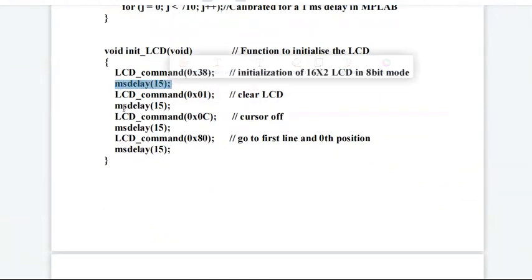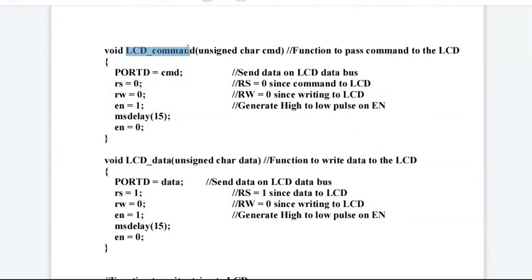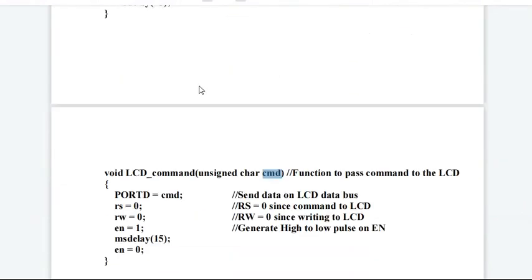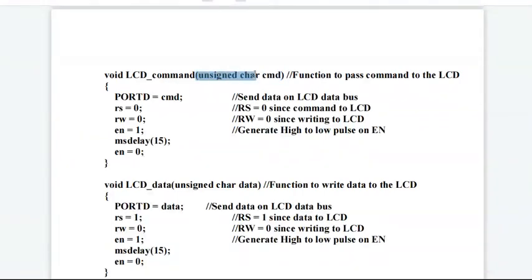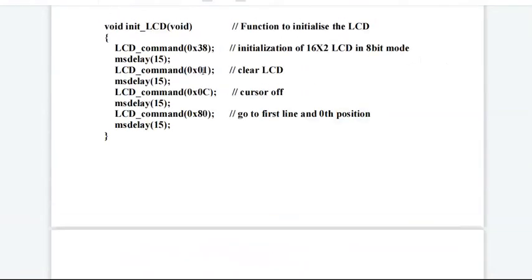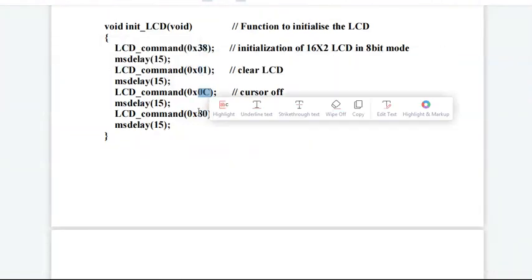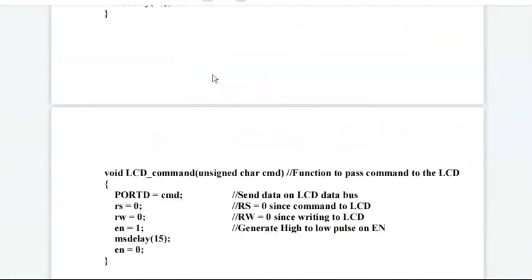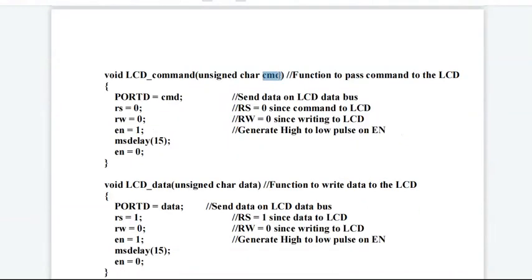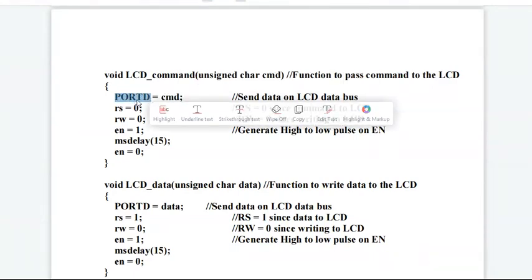In the definition of LCD_command, CMD is a variable of unsigned character data type. In CMD we are passing 0x38, 0x01, 0x0C, and 0x80 - these four values. This variable CMD will send these values to port D, and we know in the interfacing diagram port D is connected to the data lines of LCD.